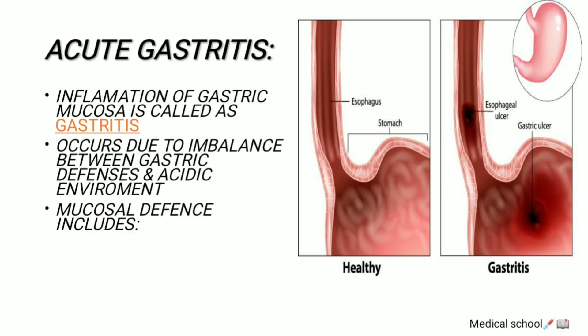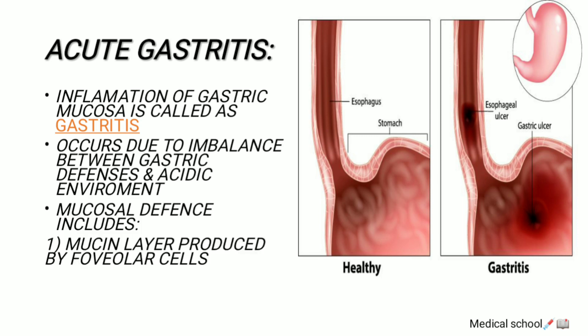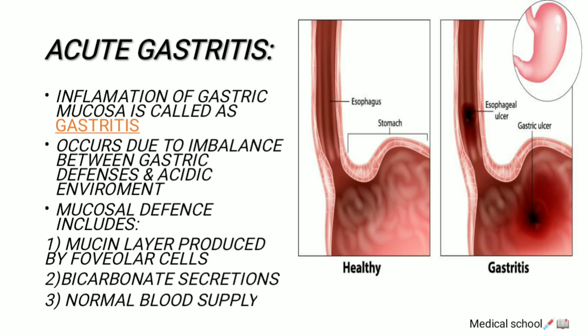Gastric defense is mainly composed of mucosal defense, and it includes the mucin layer produced by the foveolar cells. We also have bicarbonate secretions that are secreted by the epithelium of the stomach, and the normal blood supply, which is essential for nutrients.